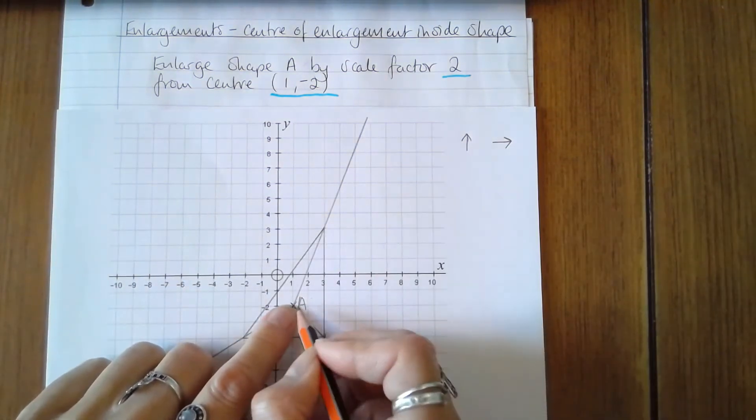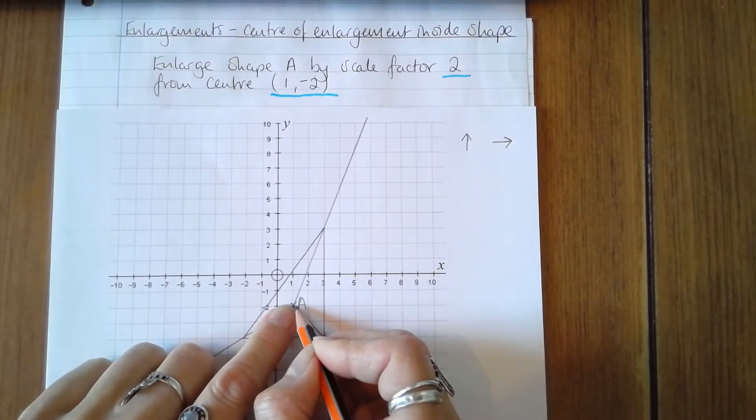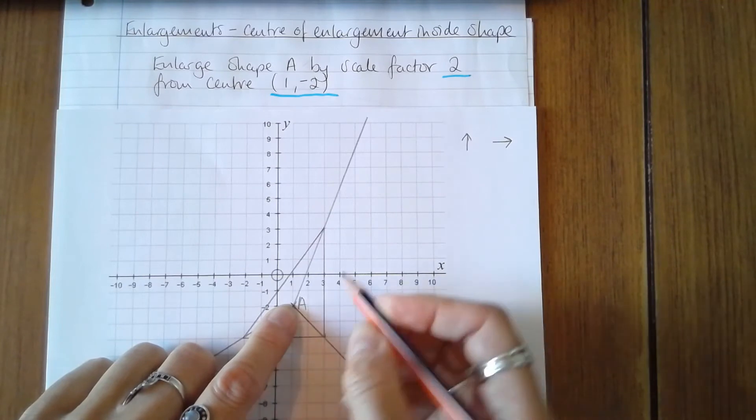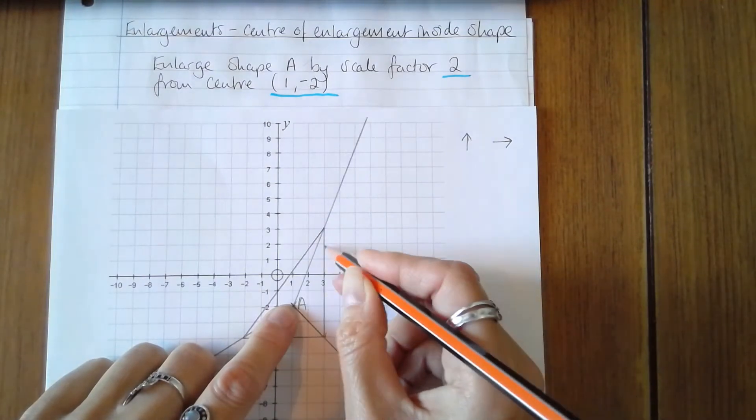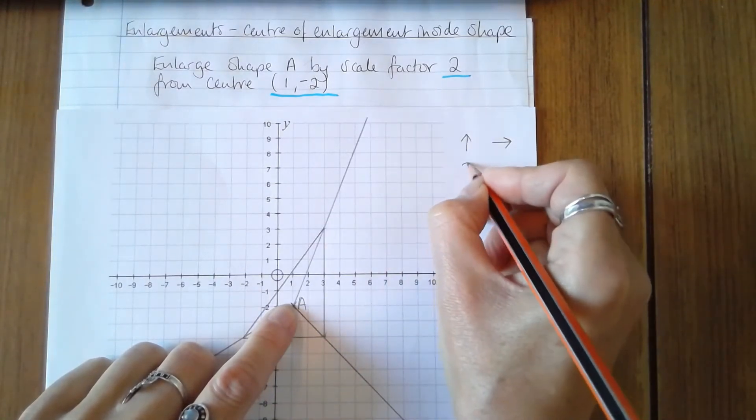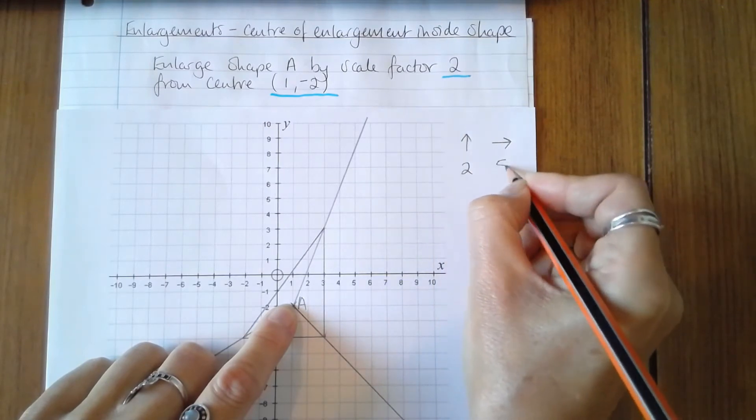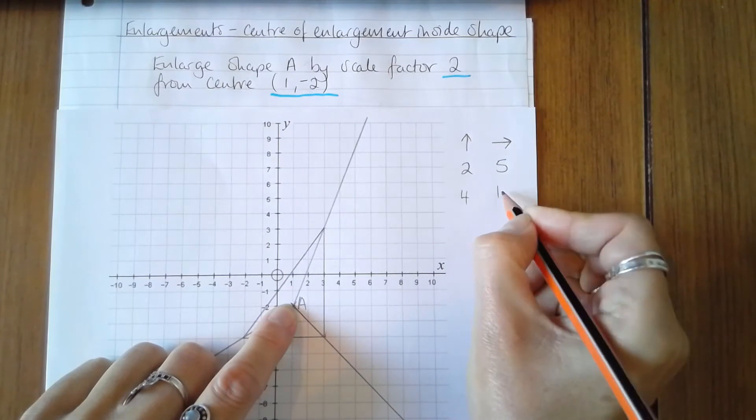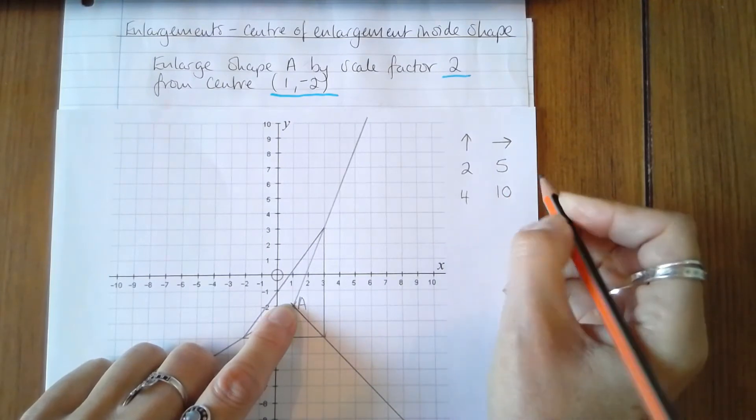So now you'll see why I need the guidelines to help with the positioning of the shape. So the first vertex here is 2 across and 1, 2, 3, 4, 5 up. 2 to the right and 5 up, and I'm multiplying each of those by 2, so that becomes 4 to the right and 10 up.